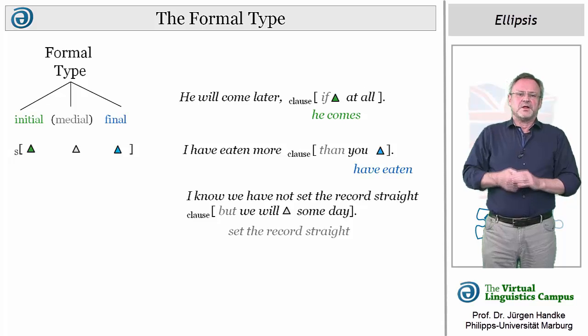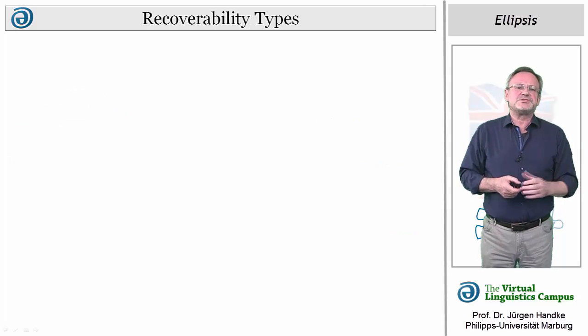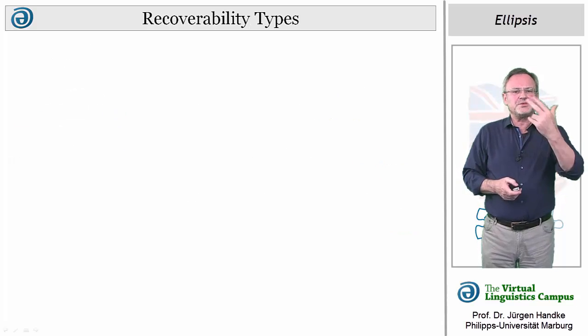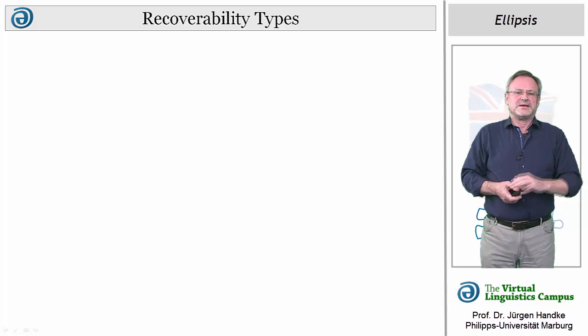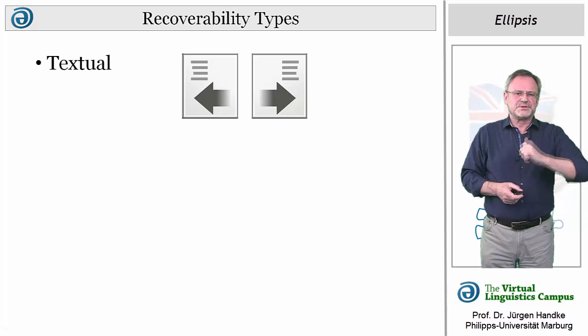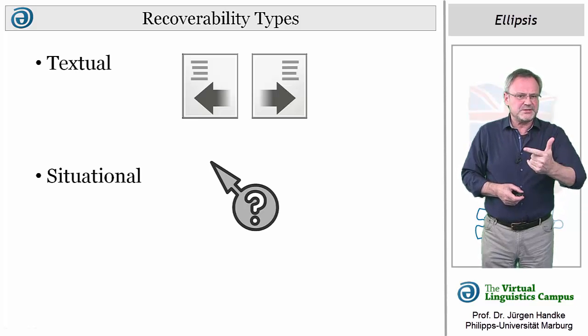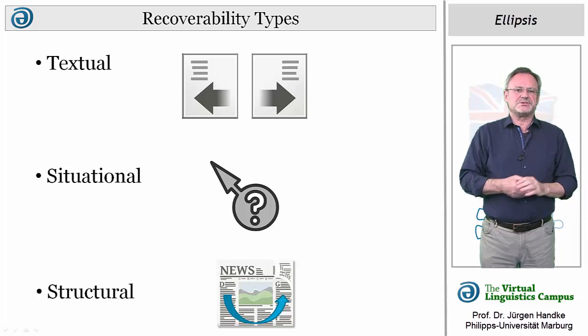The recoverability types of ellipsis can be distinguished into three subtypes: textual ellipsis, situational ellipsis, and structural ellipsis.